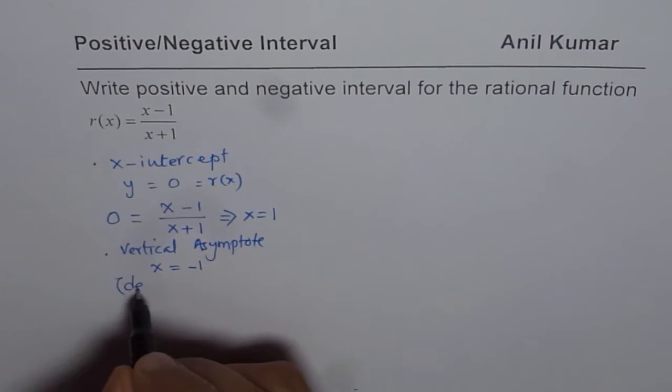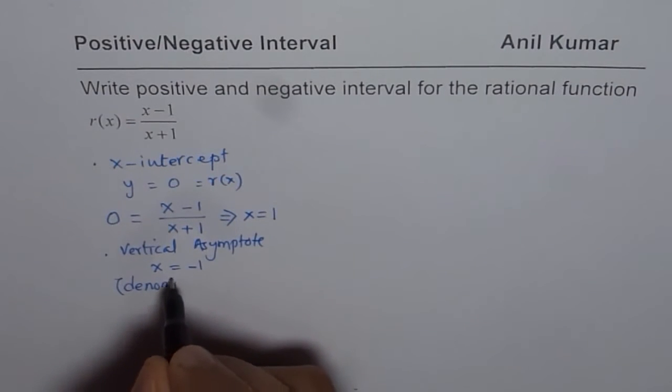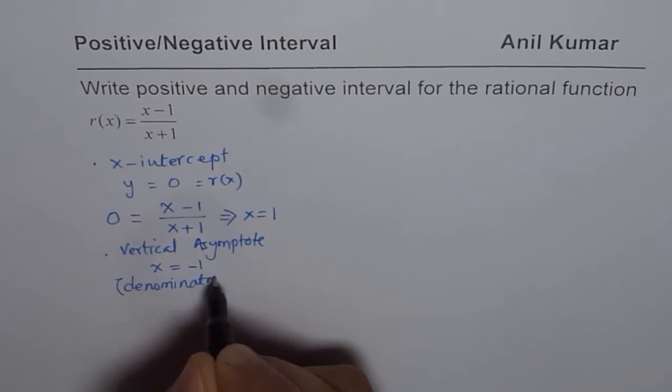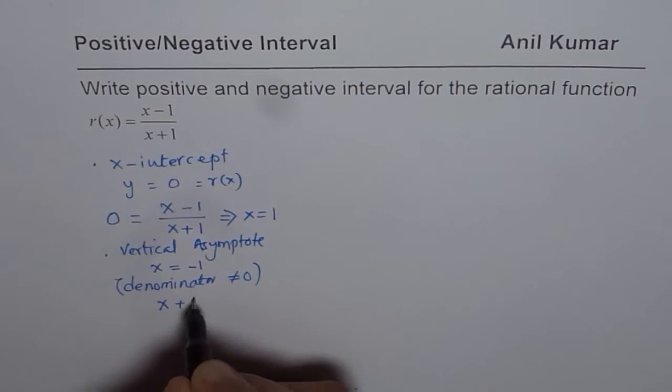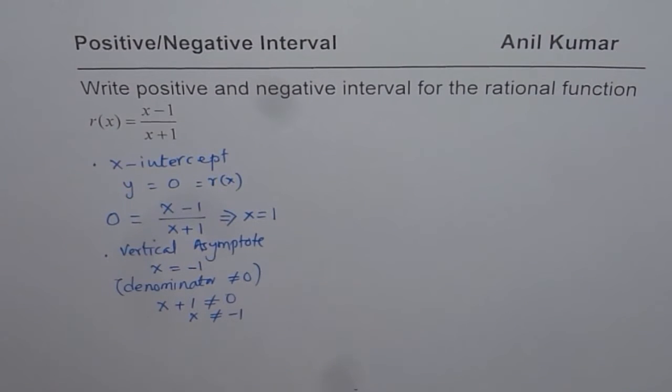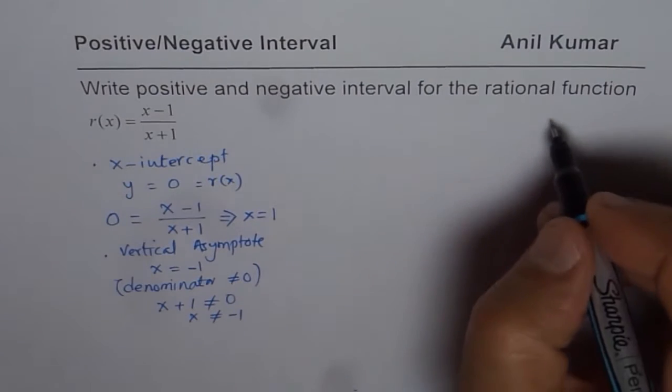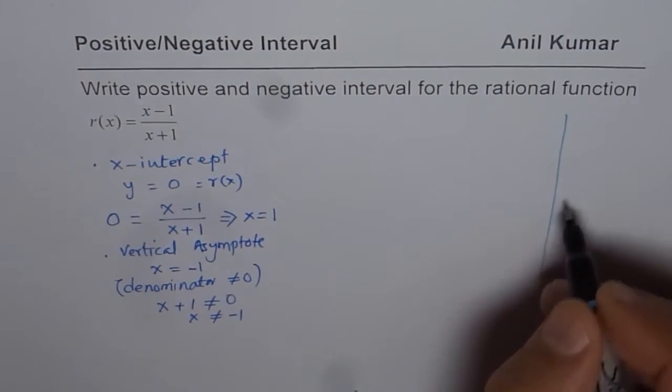So how do you find it? You find by equating denominator that cannot be 0. So x plus 1 is not equal to 0. That means x is not equal to minus 1. So that is a restriction on the domain. So with the help of this, we can kind of sketch our graph.